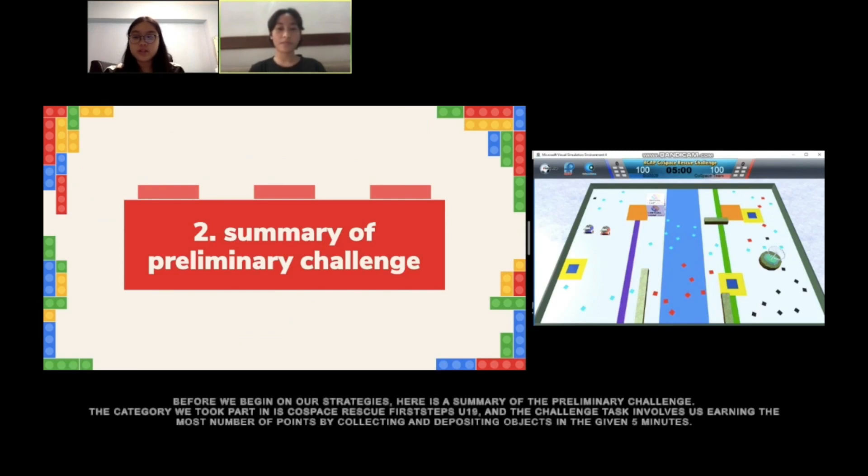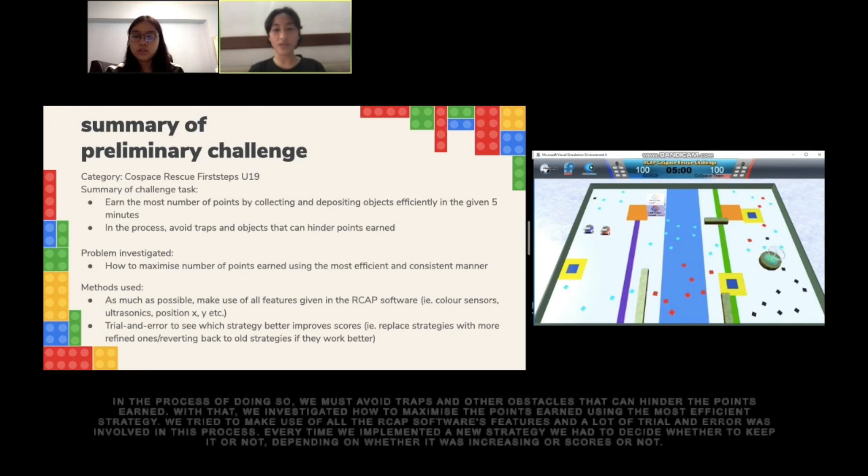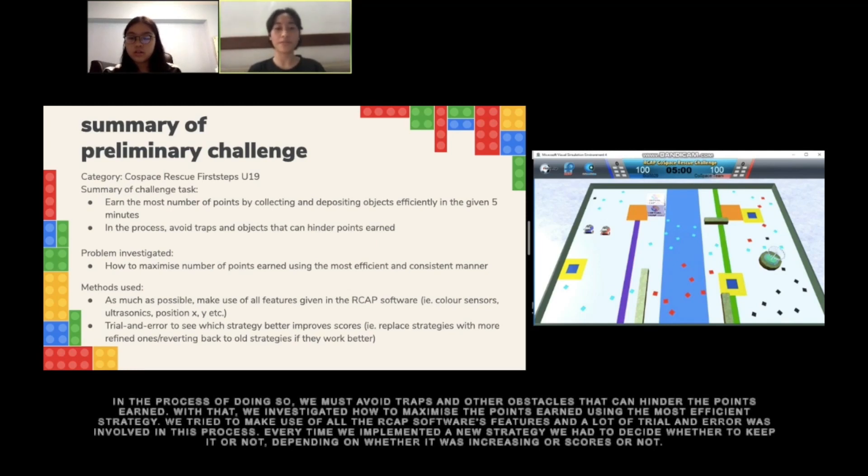Before we begin on our strategies, here is a summary of the preliminary challenge. The category we took part in is 4 Space Rescue First Steps U19. The challenge involves earning the most points by collecting and depositing objects from the given collect units. In the process, we must avoid traps and obstacles that could hinder the points earned. With that, we investigated how to maximize points using the most efficient strategies.